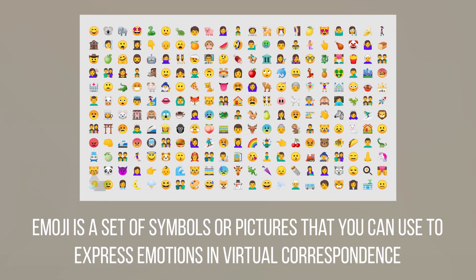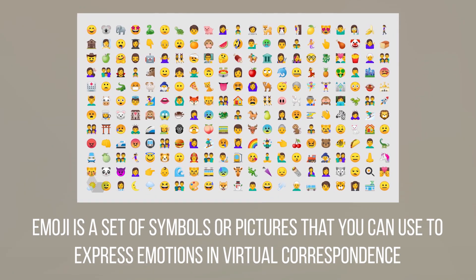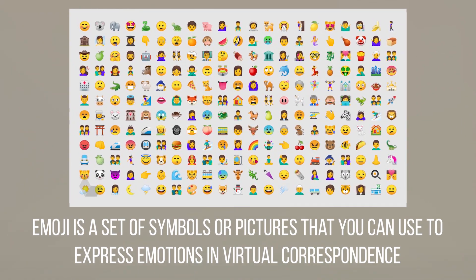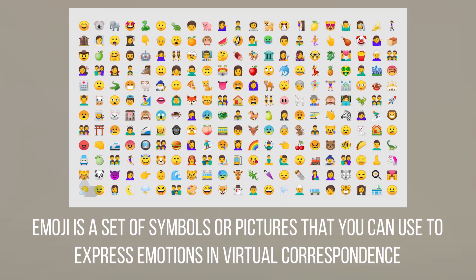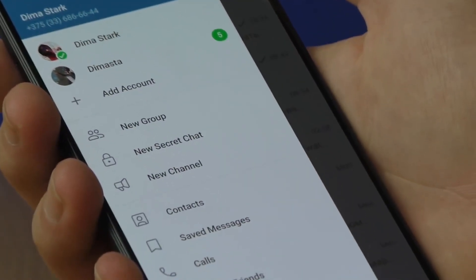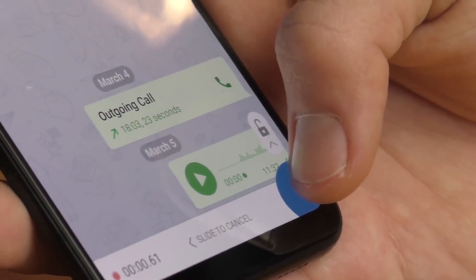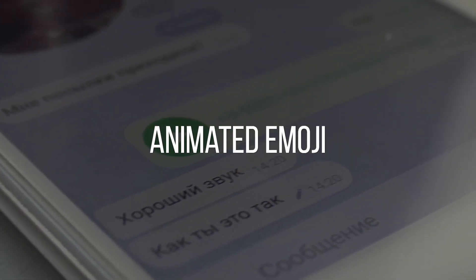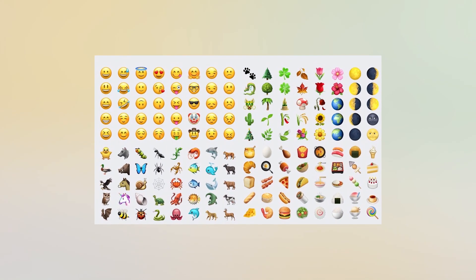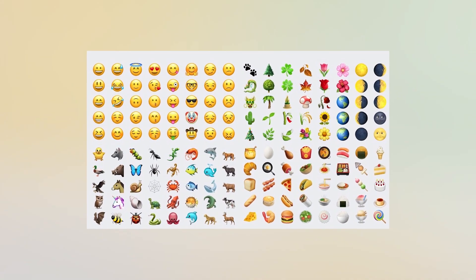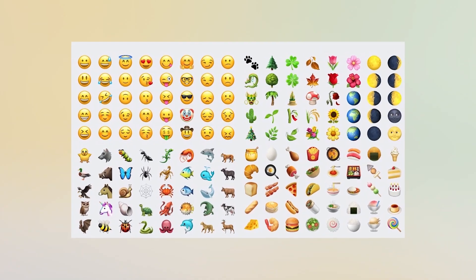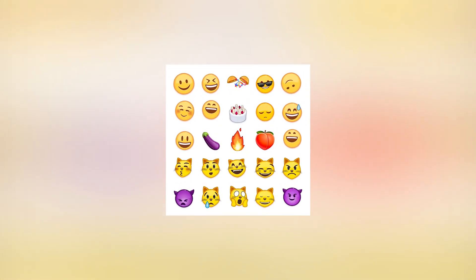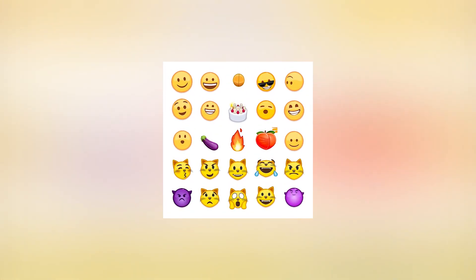Emoji is a set of symbols or pictures that you can use to express your emotions in virtual correspondence. Animated emoji have been added to Telegram's range of features. Their main difference from simple emoji, as you've already guessed, is that they are animated — animation makes the emoji alive by making them move.